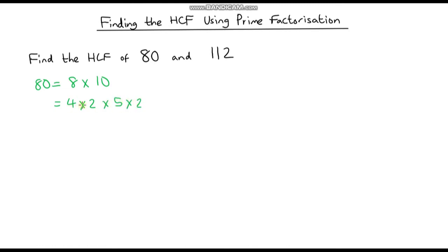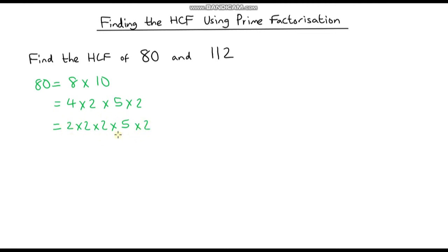So we have 4 times 2 times 5 times 2, but we're not quite finished because 4 can be broken down. 4 is 2 times 2, so 80 becomes 2 times 2 times 2 times 5 times 2. Now let's break 112 down.